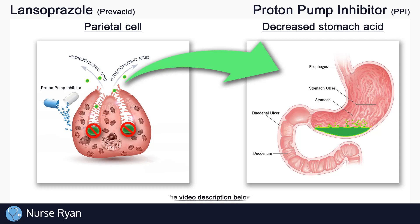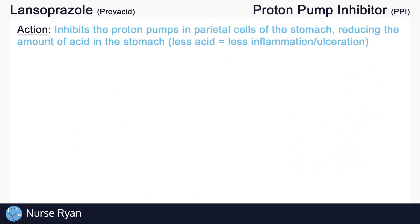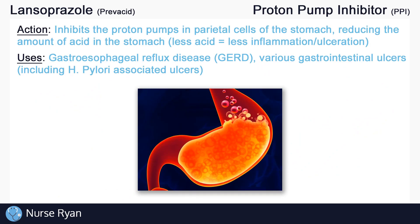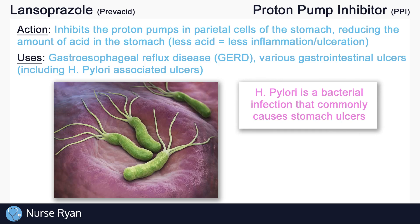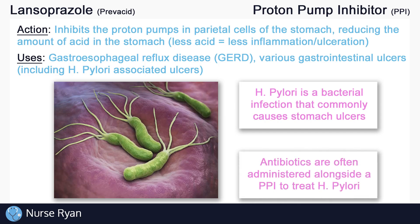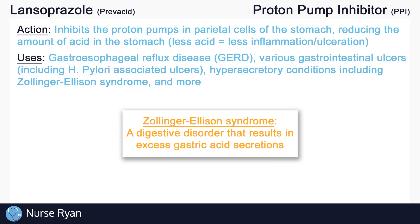This reduced stomach acid can help to treat GERD, peptic ulcers, and more. Lansoprazole can be used to treat various conditions related to excess stomach acid, including gastroesophageal reflux disease, or GERD, and treatment of various gastrointestinal ulcers, including H. pylori-associated ulcers. H. pylori is a bacterial infection that commonly causes stomach ulcers. Lansoprazole won't actually treat the infection, but rather treat some of the symptoms, such as the ulcers or heartburn, simply by reducing stomach acid. Antibiotics are often needed alongside a proton pump inhibitor to actually treat the H. pylori infection. Lansoprazole can also be used for hypersecretory conditions, including Zollinger-Ellison syndrome, which is a digestive disorder that results in excess gastric acid secretion, and more.